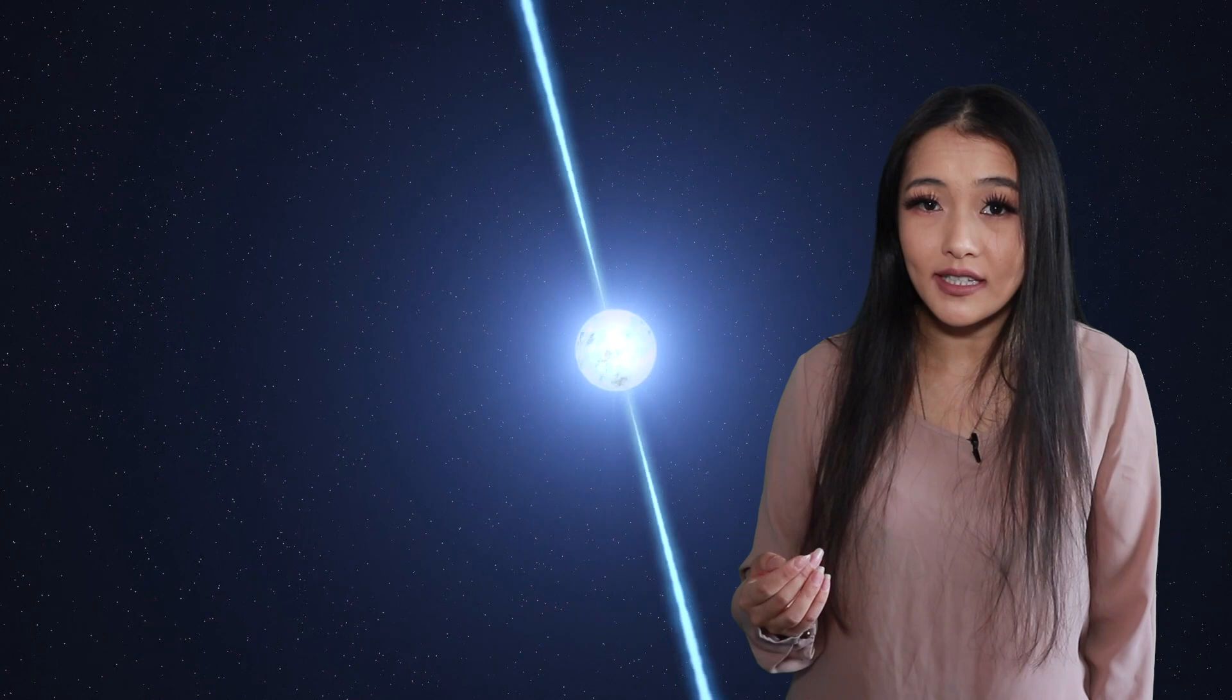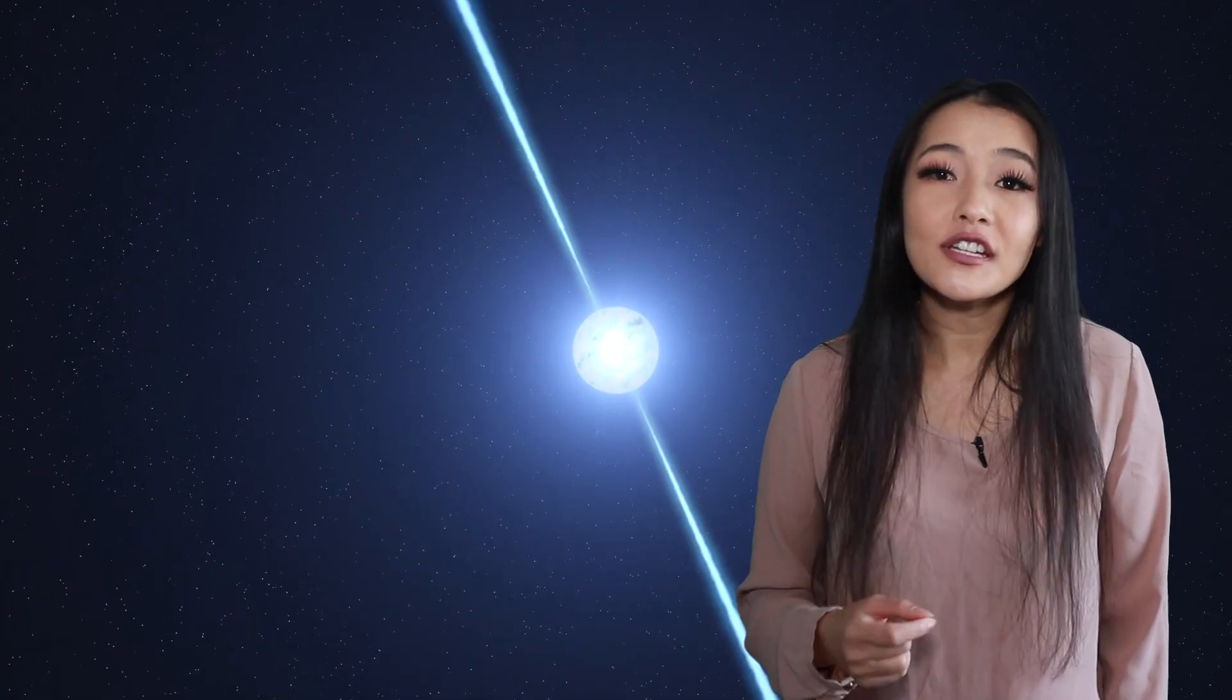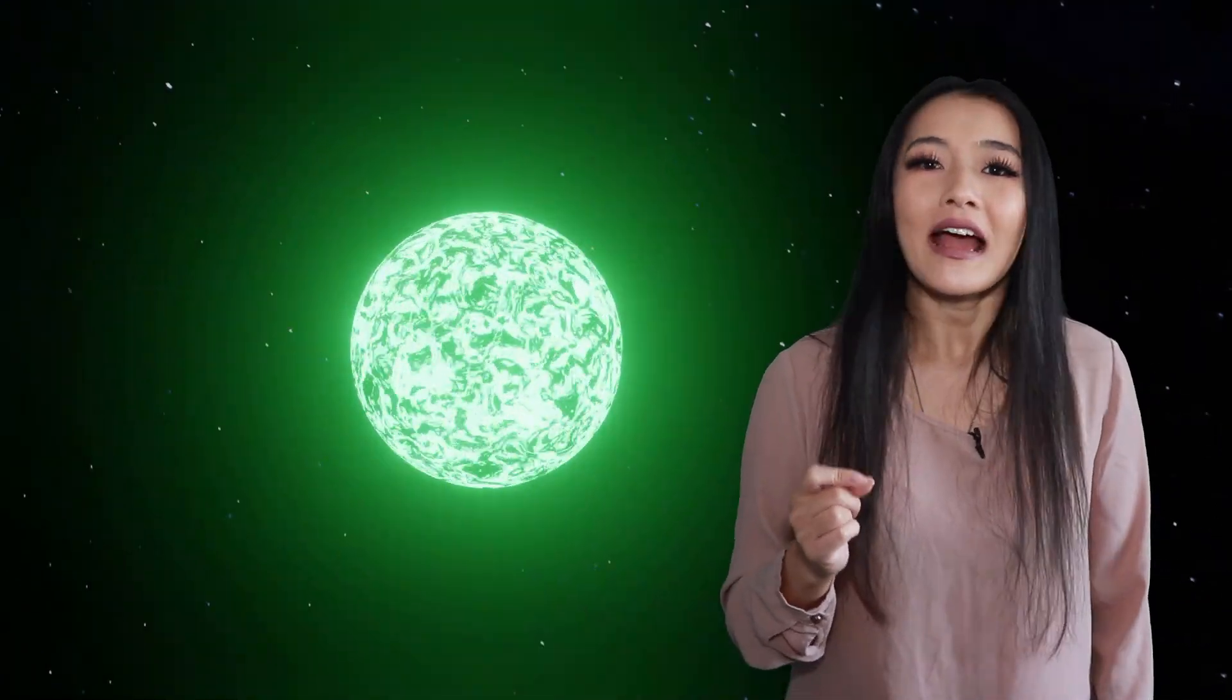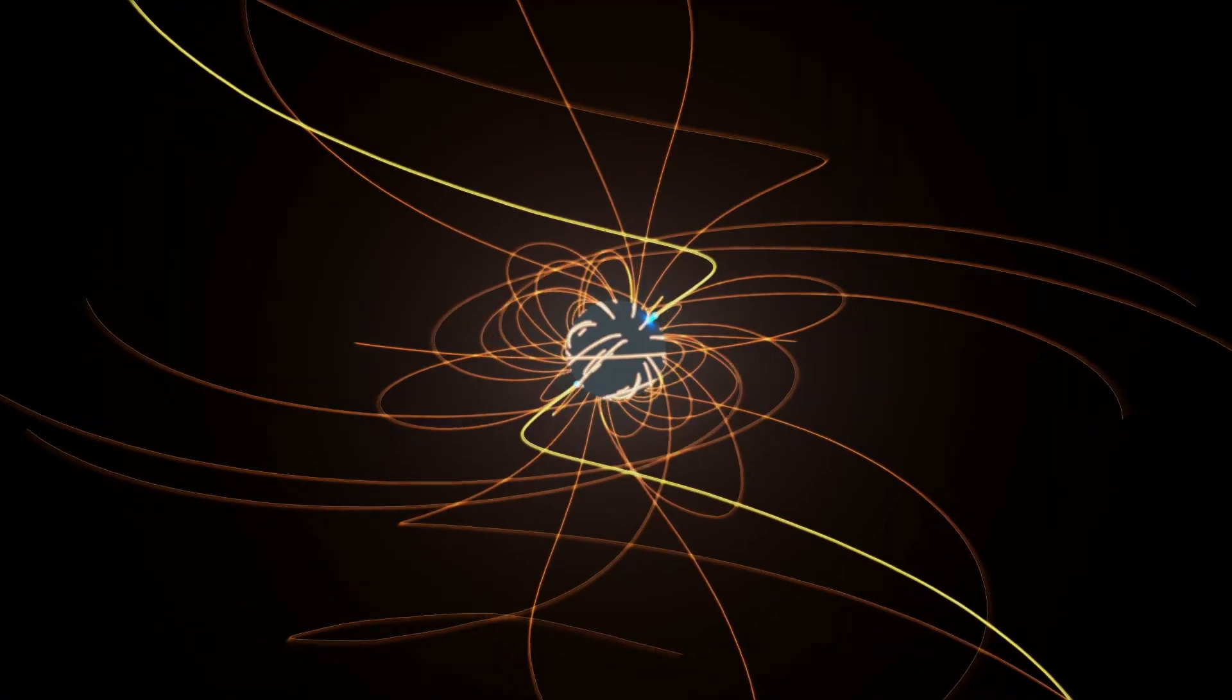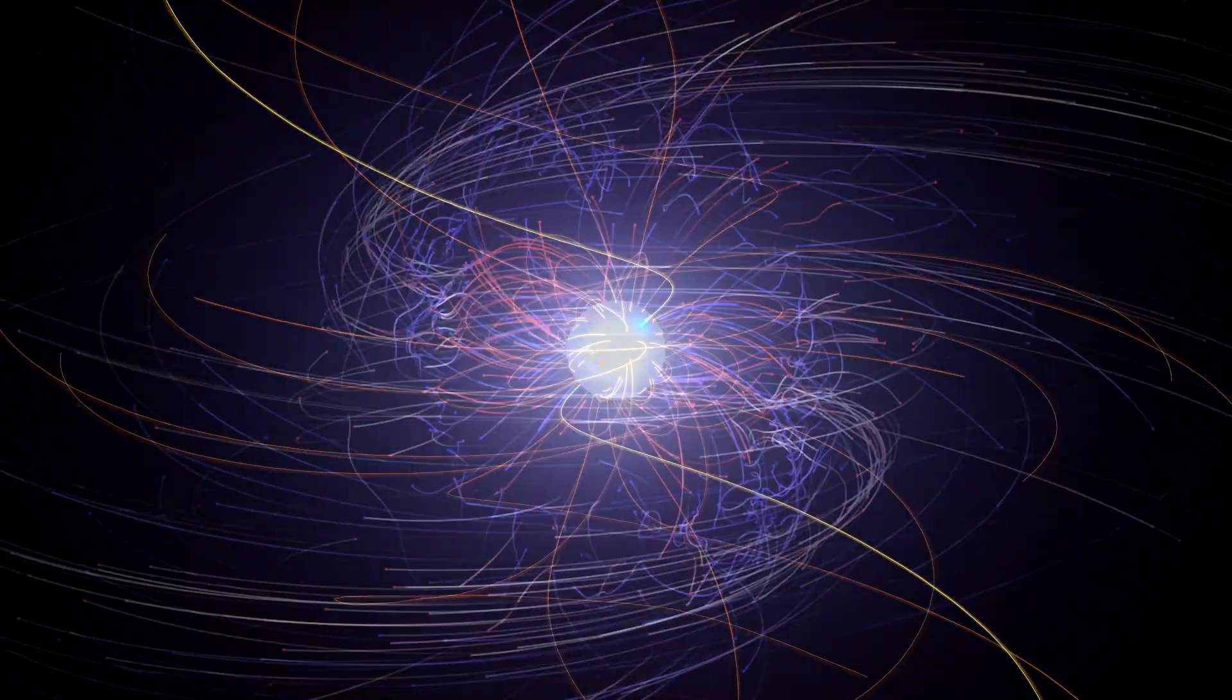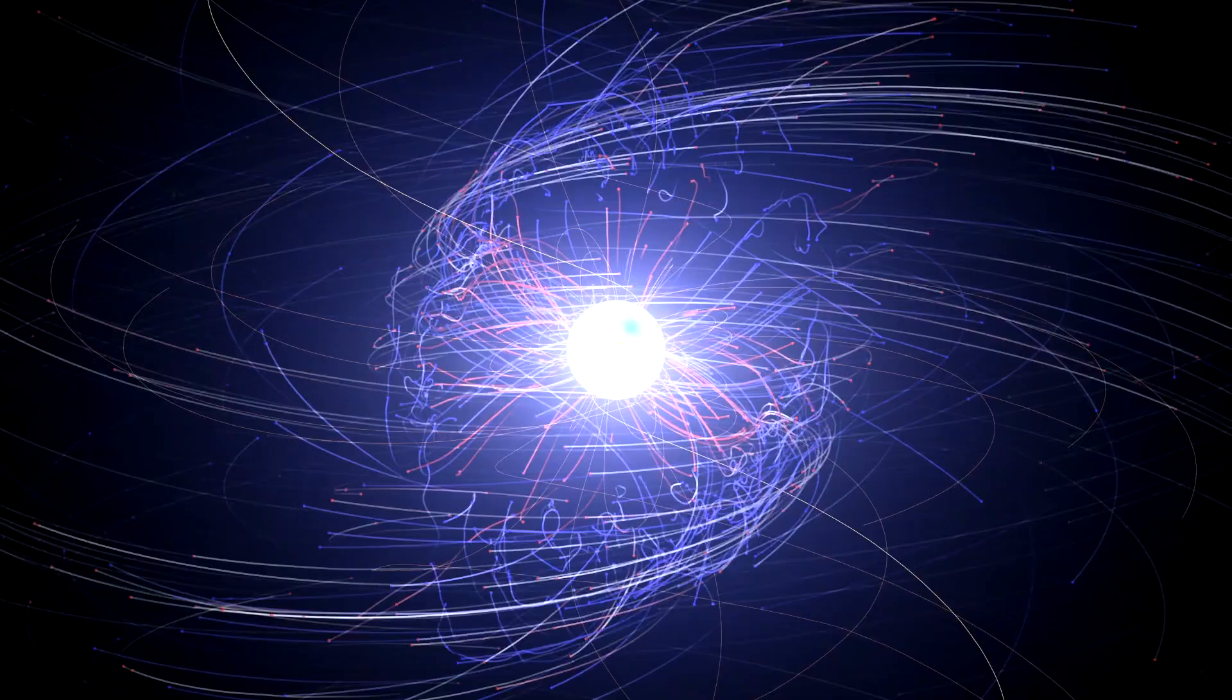Strange stars should in principle have much faster rotation periods because they have much smaller radii, and this could be identified from the pulsar emission. Lastly, electrons are held to quark matter electrostatically on the surface of a bare strange star.